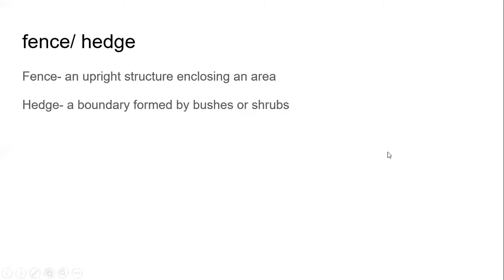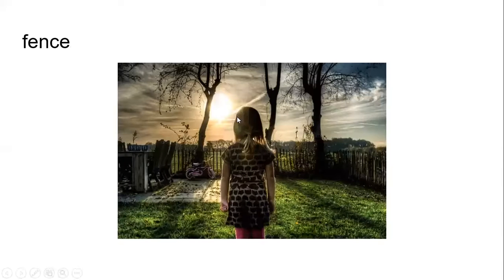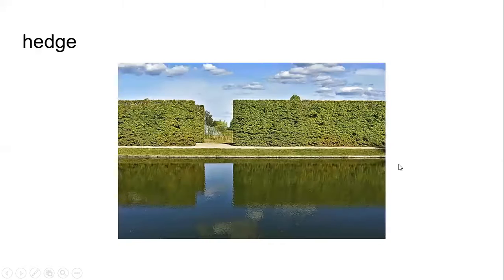Fence and hedge. A fence is an upright structure enclosing an area, and a hedge is a boundary formed by bushes or shrubs. That's what a fence looks like, and this is what a hedge looks like.